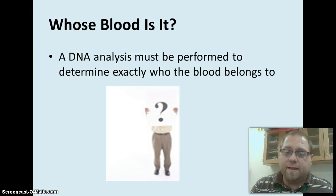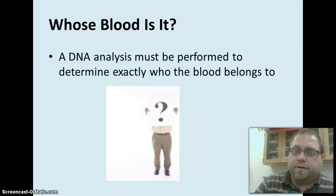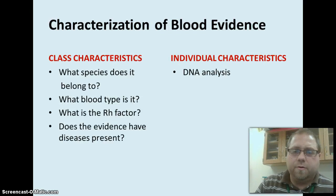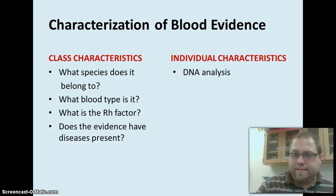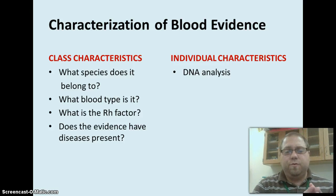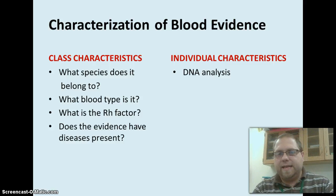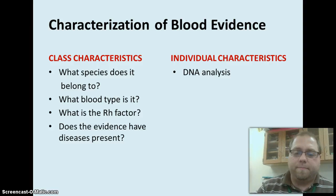Then, answering that last question of whose blood is it — that's where you would do a DNA analysis, and that is contingent on a bunch of factors, one of them being whether there are intact nuclei in the red blood cells, how old the sample was, what happened to the blood, and a lot of other things. When we talk about class characteristics versus individual characteristics, if I just find blood, I can probably test it to see what species it belongs to, what the blood type is, the RH factor, and whether it has any diseases — that gives you class evidence, meaning it can point to a group of people or rule some people out. But if you're able to actually extract DNA from it, then it can point you towards a particular individual.